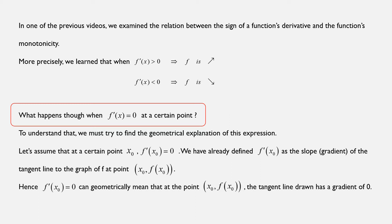Let's assume that at a certain point x₀, we have the derivative of f being equal to 0. We have f'(x₀) equals 0. We have already defined that f'(x₀), the value of the derivative of a function f at a given point x₀, is the slope, or in other words the gradient, of the tangent line to the graph of f at that point with coordinates (x₀, f(x₀)). Hence, f'(x₀) equals 0 can geometrically mean that at that point with coordinates (x₀, f(x₀)), the tangent line that can be drawn has a gradient of 0.